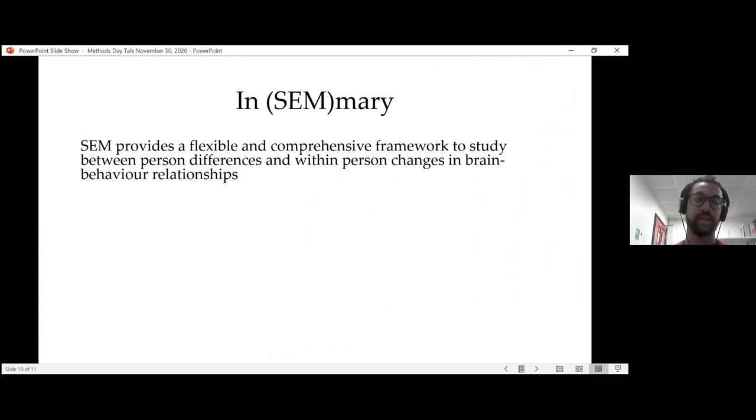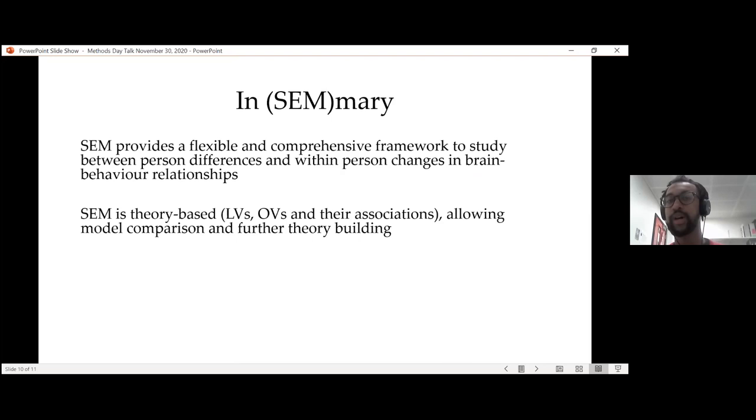And so, in summary, SEM basically is very flexible and is very comprehensive, so you can do a lot of different multivariate approaches to study these either between-person differences for cross-sectional data or even within-person changes in brain-behavioral relationships. Like I said, it's theory-based, so when you fit models, the way you specify latent variables and how they relate to observed variables should be based on theory. You should basically have a reason as to why you think that these variables relate in the way that they do based on previous literature or if you're trying to push the envelope. Which allows for model comparison through the different complexity measures and goodness of fit, which then feeds back into the process to enable better, even further theory building later on. So these models can get more and more sophisticated and robust over time.